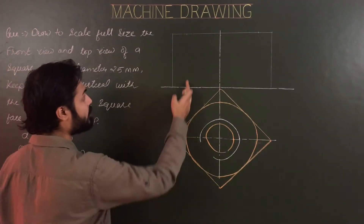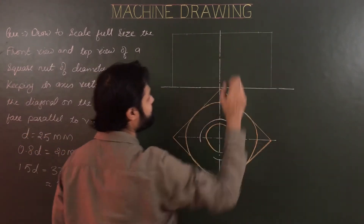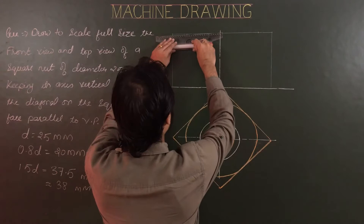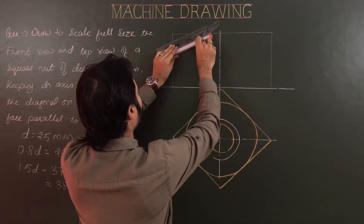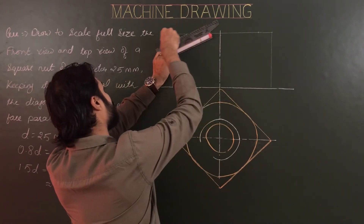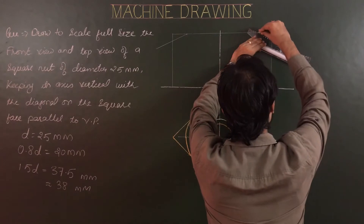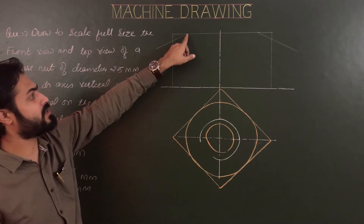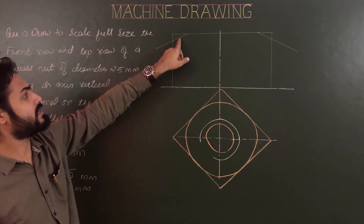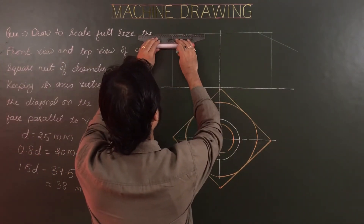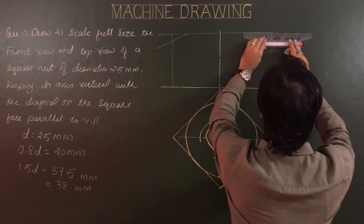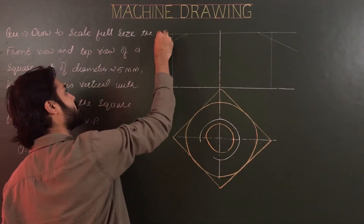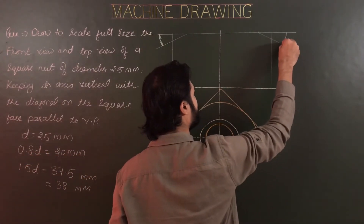Project this point up to the top edge, and from this projected point draw a line at an angle of 30°. From the top edge, this line starts at 30° — extend it for dimensioning. This angle is 30°.